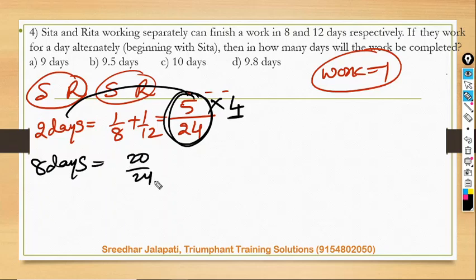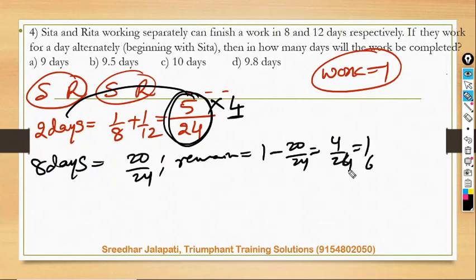Since I am considering four such cycles, in eight days work done by them is twenty by twenty-four. So remaining work is equal to one minus twenty by twenty-four, which is four by twenty-four, which is one sixth.